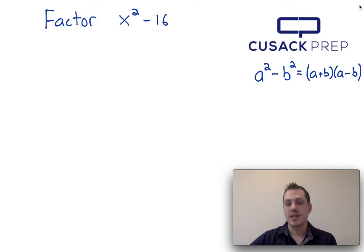Now, to use this formula, you basically have to identify that if x squared minus 16 is what you're factoring, then a squared is x squared, and b squared is 16,